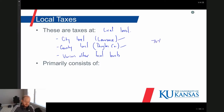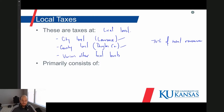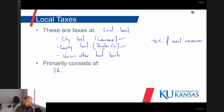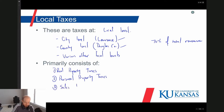For local governments, local level taxes make up about 70% of total revenue. Some local government funding comes from the state, some from the federal government, and some from fines and fees — which are distinct concepts from taxes. The primary types of local government taxes are real property taxes, personal property taxes, sales taxes, and very rarely income taxes.